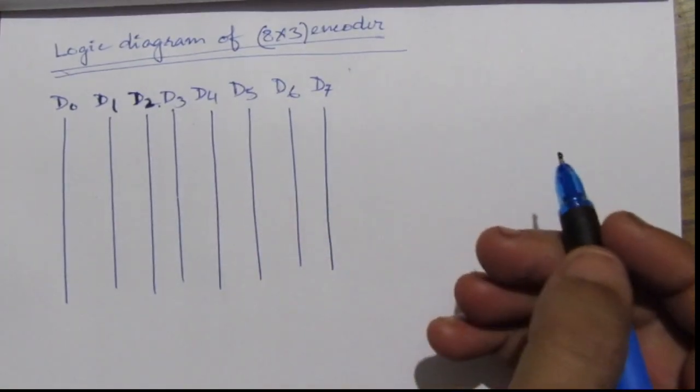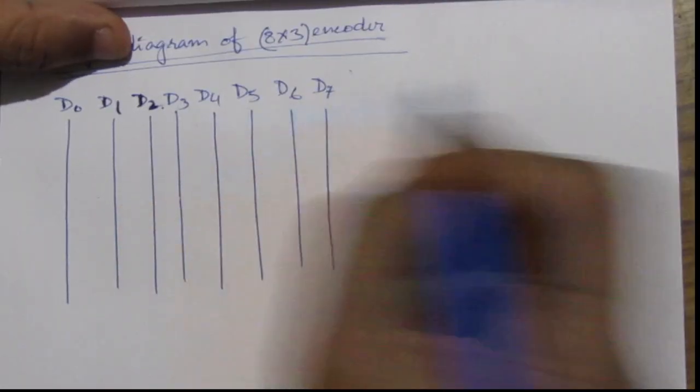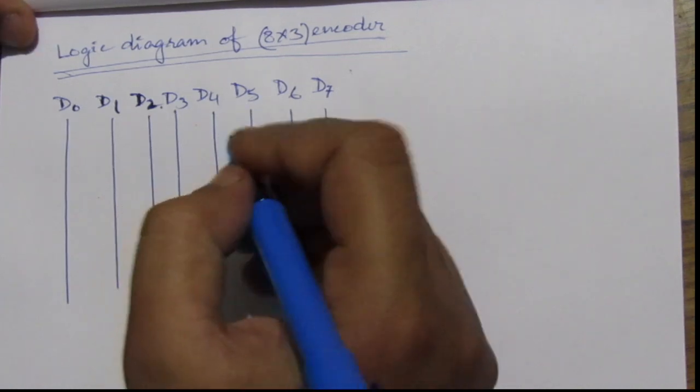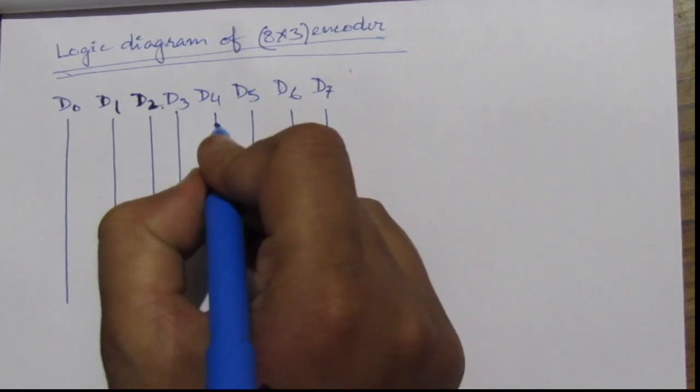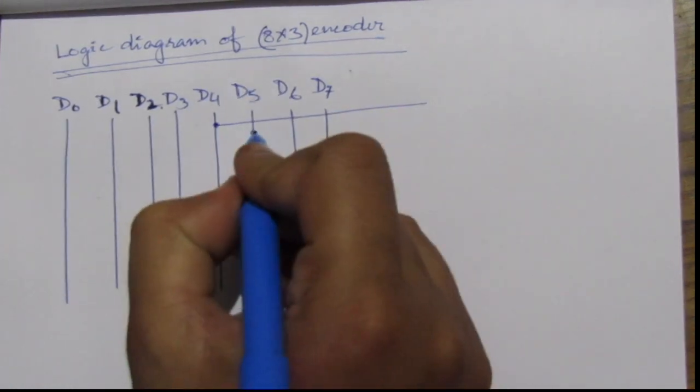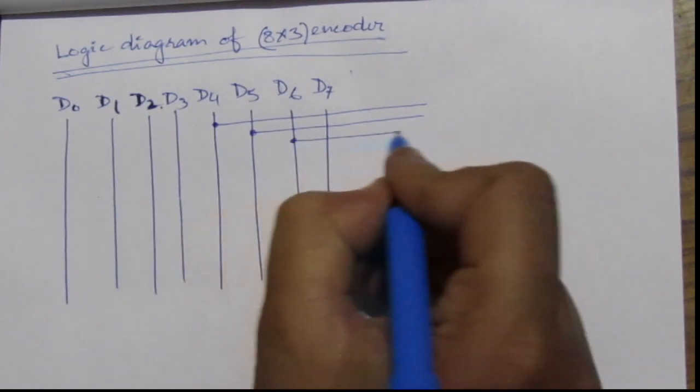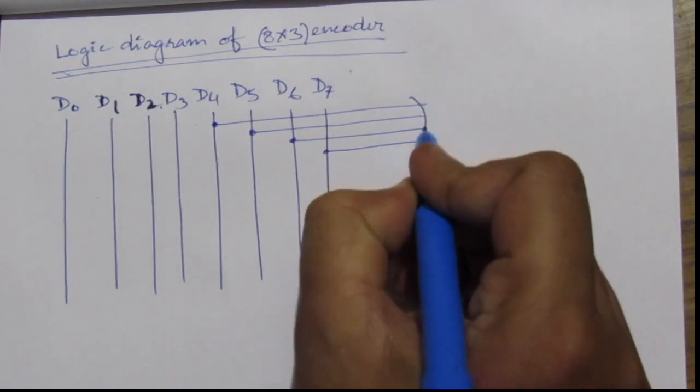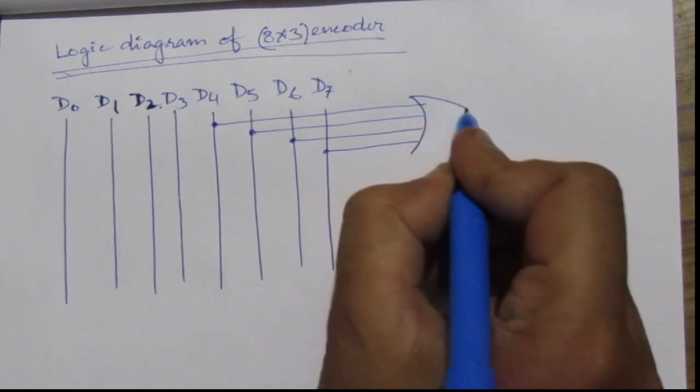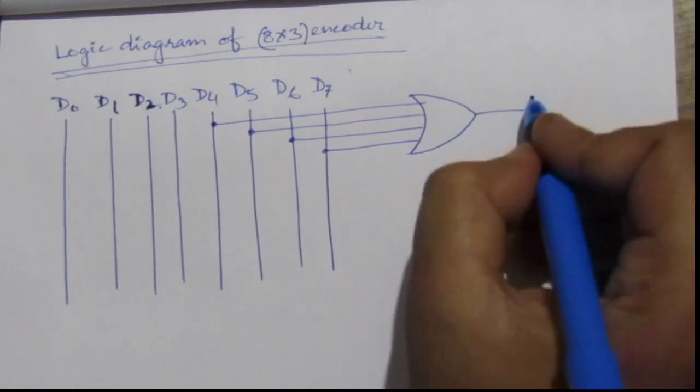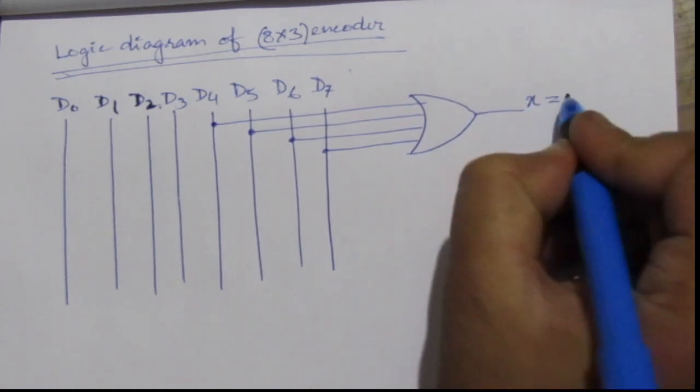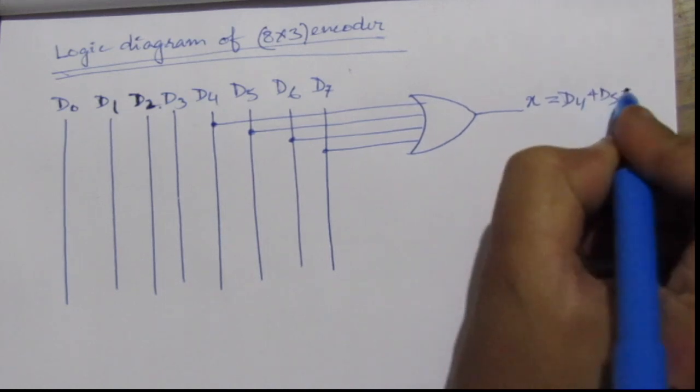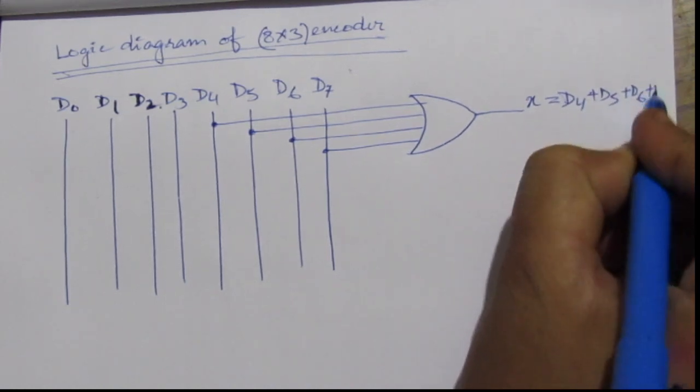So for x we have d4, d5, d6, d7. So we need to get the sum for this. d4, d5, d6, d7. So we have 4 OR operations here and we get the x equal to d4 plus d5 plus d6 plus d7.